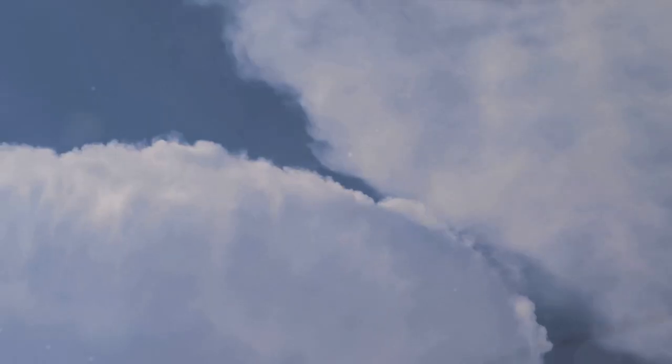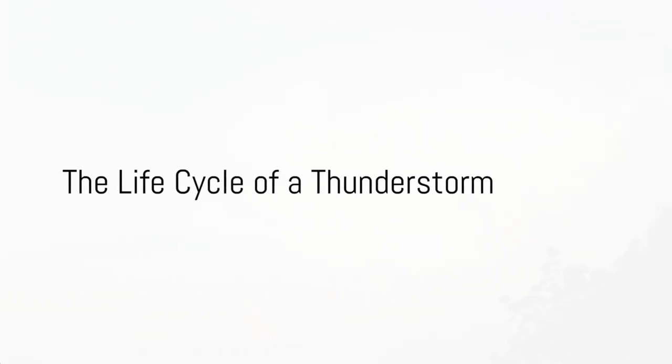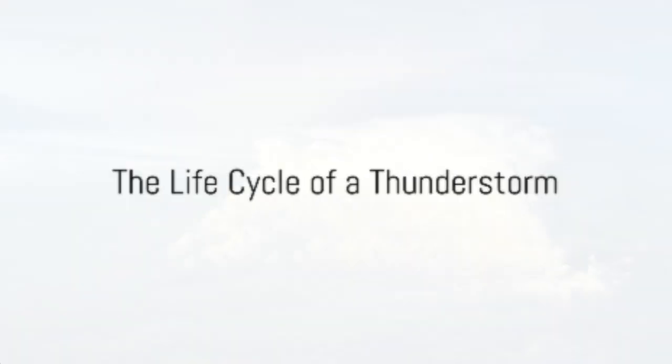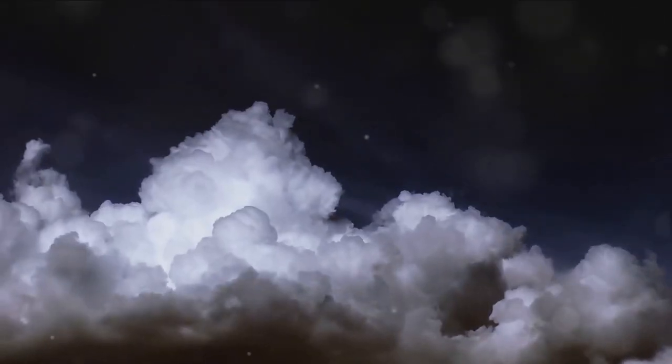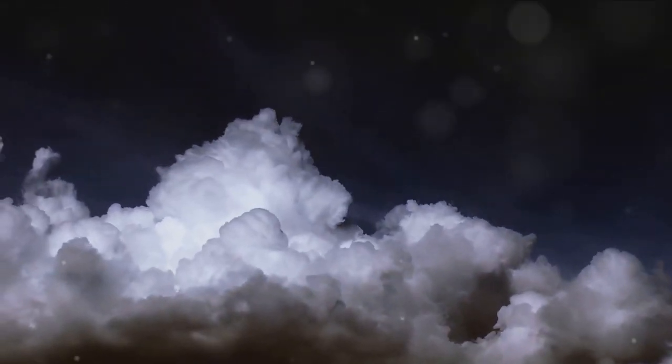it cools and condenses to form a cumulus cloud, the first step in the birth of a thunderstorm. But the journey doesn't stop there. The cloud continues to grow, fed by the continuous updraft of warm, moist air.